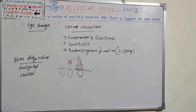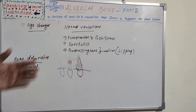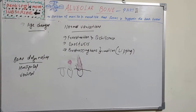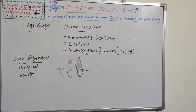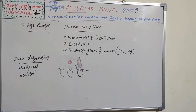To conclude, we've covered alveolar bone — its types, formation, composition, normal variations, bone deformities, and age changes. This completes the periodontium: gingiva and periodontal ligament are the soft tissues, and cementum and alveolar bone are the hard tissues. These are the supporting structures of the tooth. Upcoming sessions will cover enamel, dentine, and pulp.